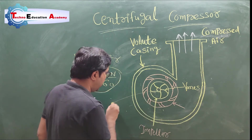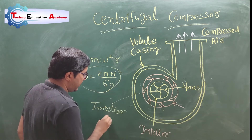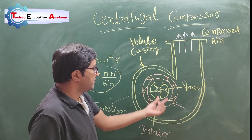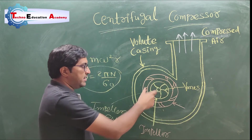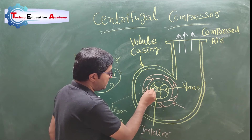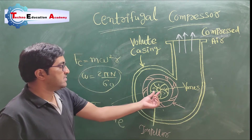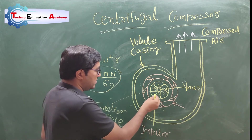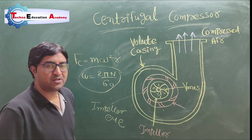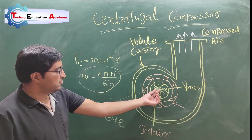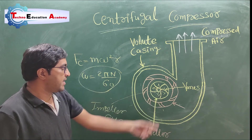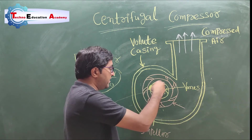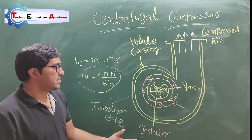This is called impeller eye. The fluid or air enters into the impeller. Whenever the disk of the impeller is rotated, due to centrifugal force the mass is away from the centroidal axis. Here mass means we are considering air. Whenever the air particles move away from the centroidal axis, negative pressure is generated — because energy always flows from high grade to low grade. So due to the negative pressure generated in the impeller eye, it will suck the air from the atmosphere. Then as it rotates, it throws the mass of the air outward.